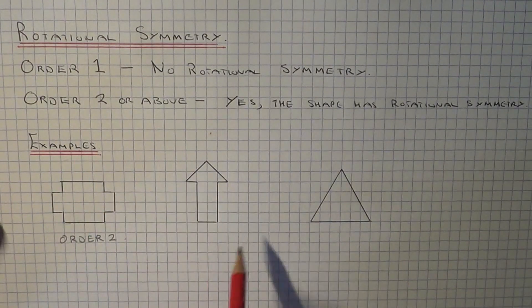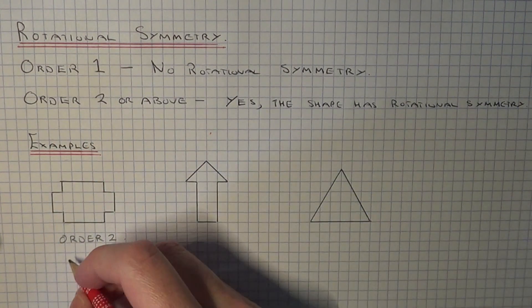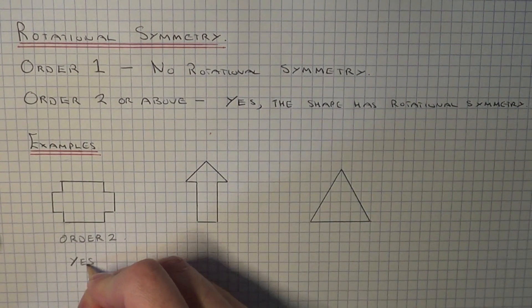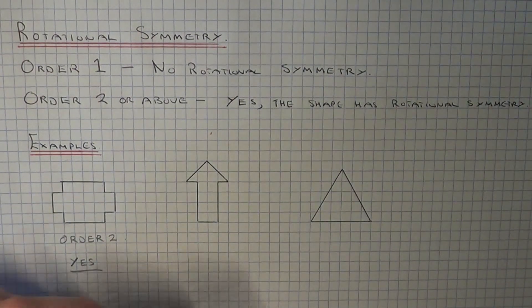So if the order is two or above, then the shape does have rotational symmetry. Okay, let's move to shape two then.